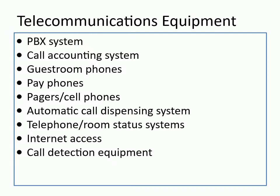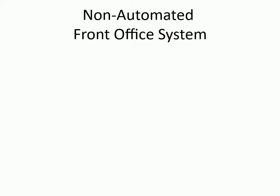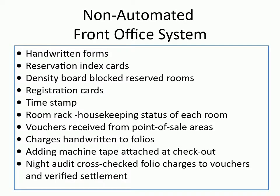The non-automated front office system uses handwritten forms, reservation index cards, density board for blocked and reserved rooms, registration cards, time stamp, room rack showing housekeeping status of each room, vouchers received from point-of-sale areas with charges handwritten to folios, adding machine with tape attached at checkout, and night audit cross-checking folio charges to vouchers and verifying settlement.